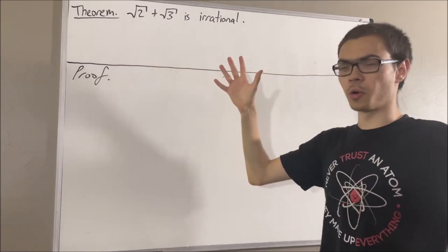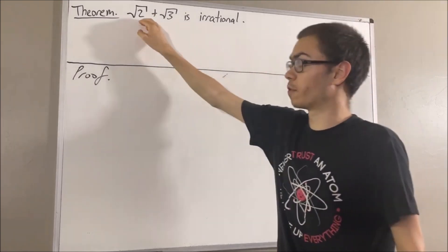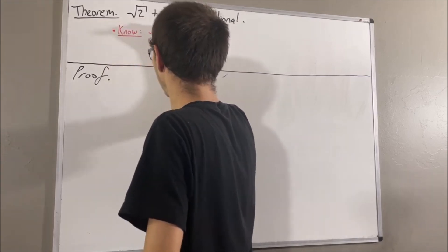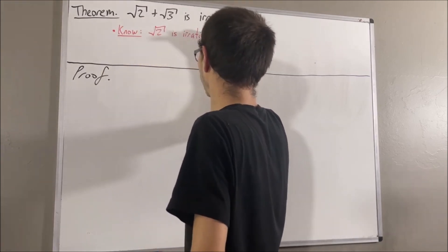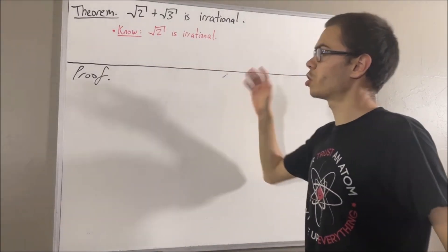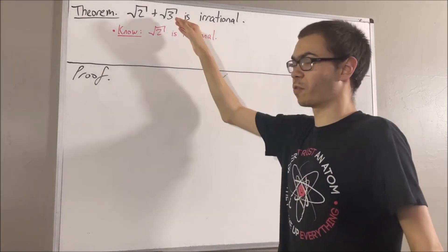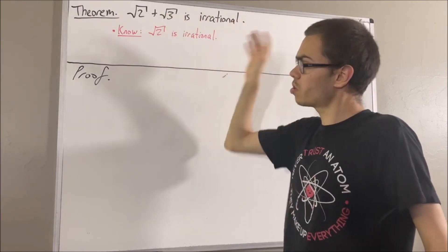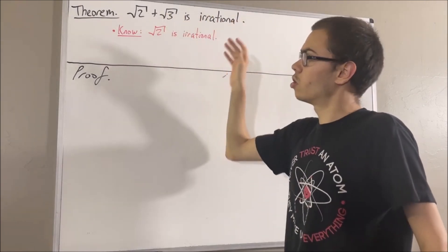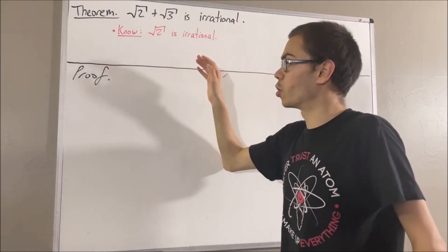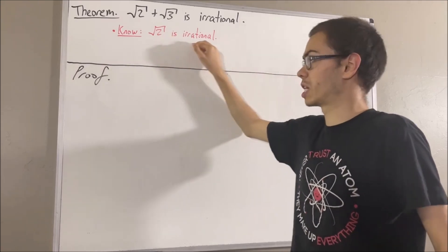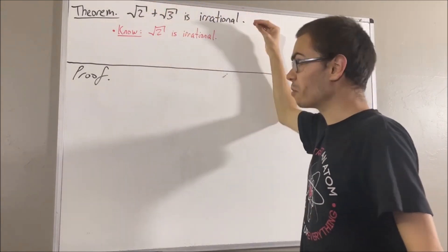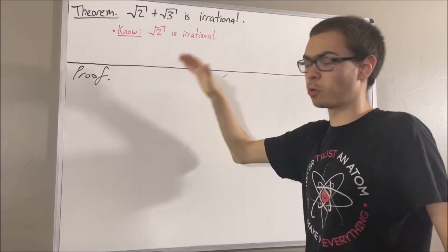Now, we already know that the square root of 2 is irrational. But should we also know that the square root of 3 is irrational to prove this? Well, it turns out all we need to know is that the square root of 2 is irrational in order to prove this. So, let's get into the proof.